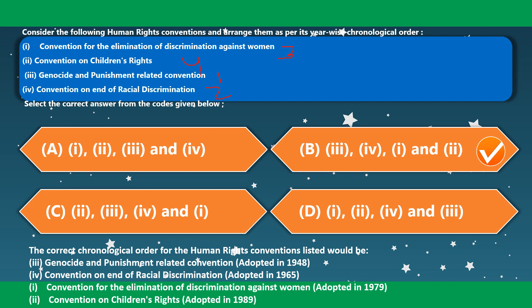The Genocide and Punishment related convention was adopted in 1948. Convention on Elimination of Racial Discrimination was adopted in 1965. Convention for the Elimination of Discrimination against Women was adopted in 1979. Convention on Children's Rights was adopted in 1989.